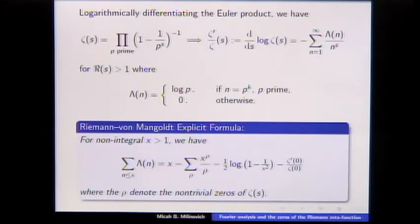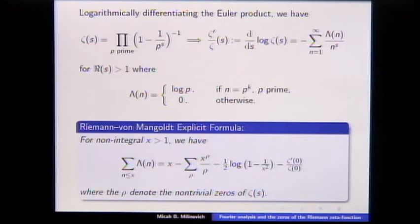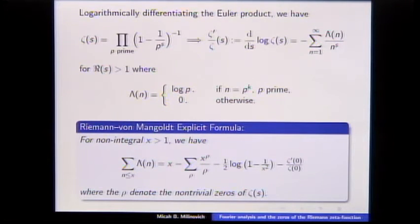Through Mellin transform identities or complex integration, you can get what are known as explicit formulas. The one usually proved in a first course in analytic number theory is the Riemann–von Mangoldt explicit formula. Assuming x is not an integer, if you sum n less than x, you get an x contribution from the pole of the zeta function, and a sum over the non-trivial zeros x to the rho over rho.